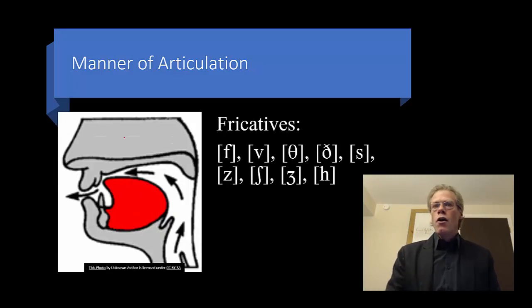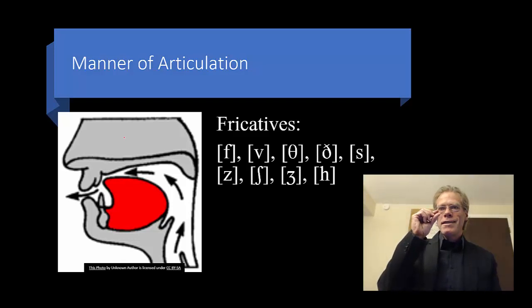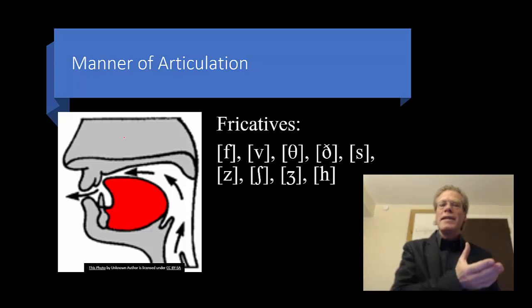Then we get to the fricatives, which has a very narrow constriction. And what that does is it creates friction in the air. You get a lot of white noise associated with these. Think about the wind going through a tunnel or something like that where you get a lot of white noise as it comes out.